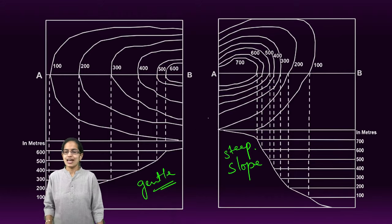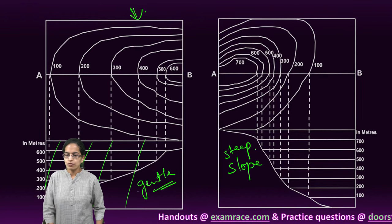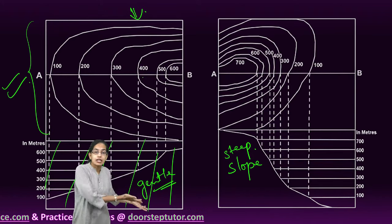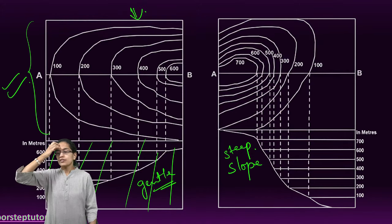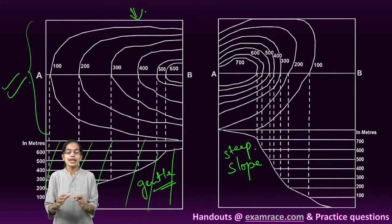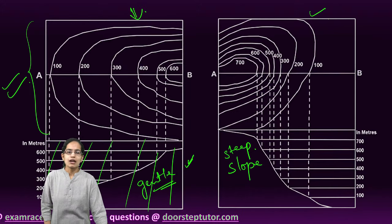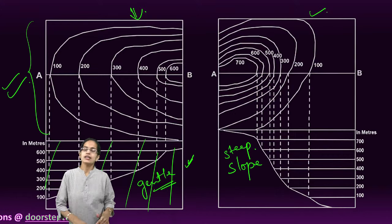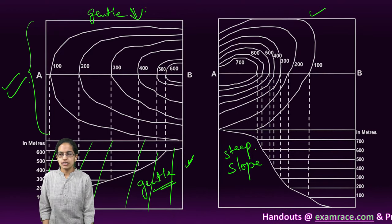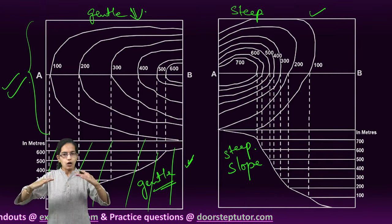Common exam questions give you only the contour map and ask you to draw the actual relief seen on the ground. You would have to draw a cross section — extending the contours to create a 3D view — to determine whether it is a gentle slope or a steep slope. With practice, simply by visualization you can identify the slope type.